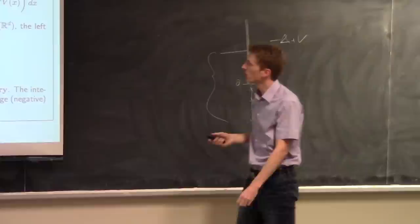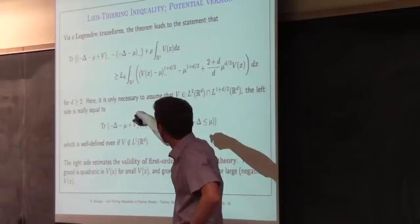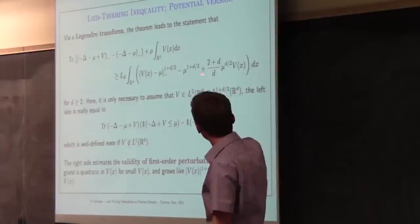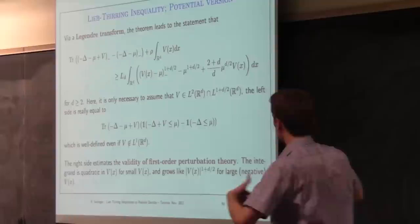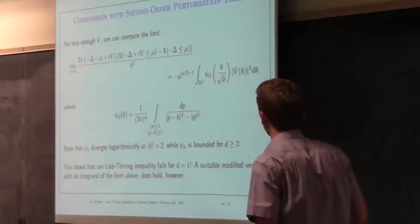This gives a bound on the spectrum of the Schrödinger operator all the way into the continuous spectrum. In some sense it is an estimate on the validity of first-order perturbation theory, since the first-order term is exactly ρ·∫V, and all higher-order corrections are estimated in terms of the semi-classical expression — which behaves like v² for small v.